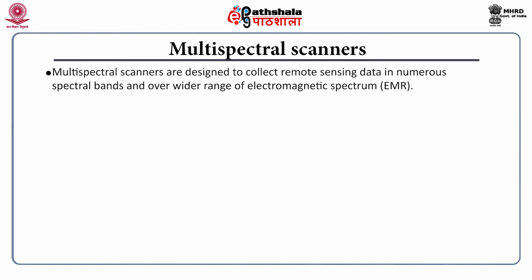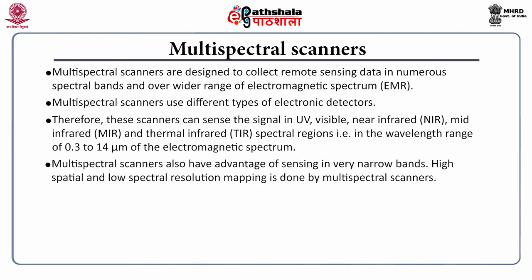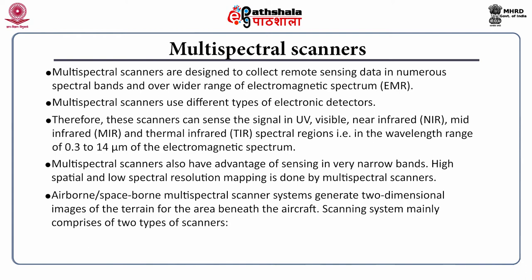Multispectral scanners are designed to collect remote sensing data in numerous spectral bands and over a wider range of the electromagnetic spectrum. They use different types of electronic detectors and can sense signals in ultraviolet, visible, near infrared, middle infrared, and thermal infrared spectral regions — that is, wavelength ranges of 0.3 to 14 micrometers. Multispectral scanners also have the advantage of sensing in very narrow continuous bands, and the scanning system mainly comprises two types: the whisk broom scanner and the push broom scanner.